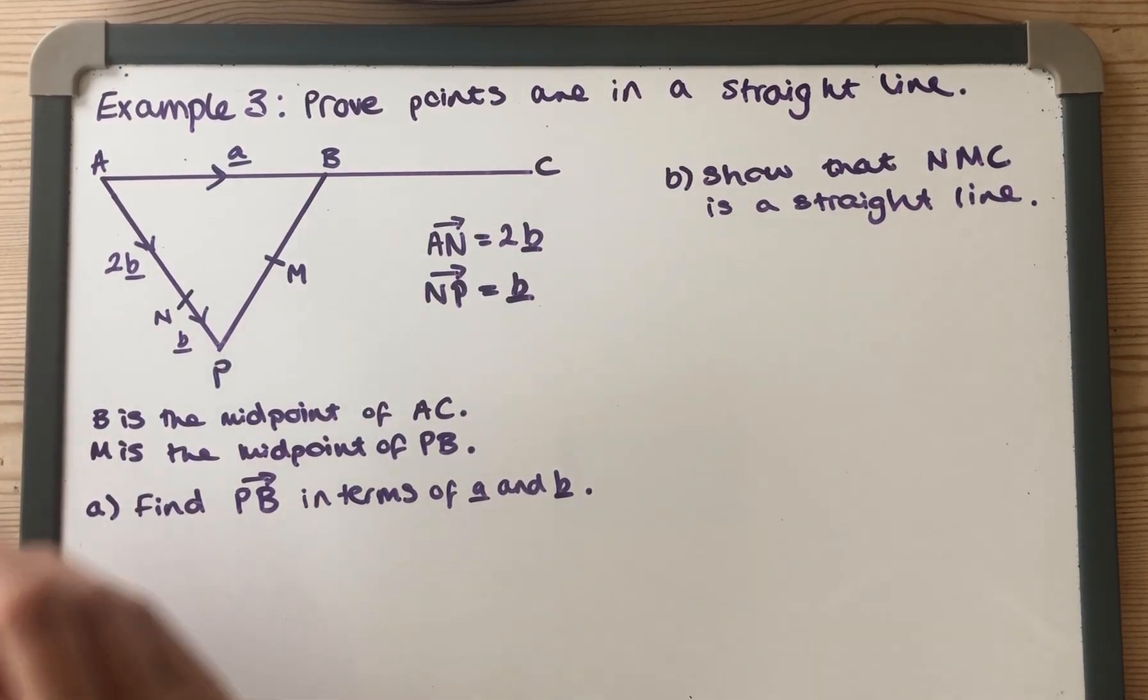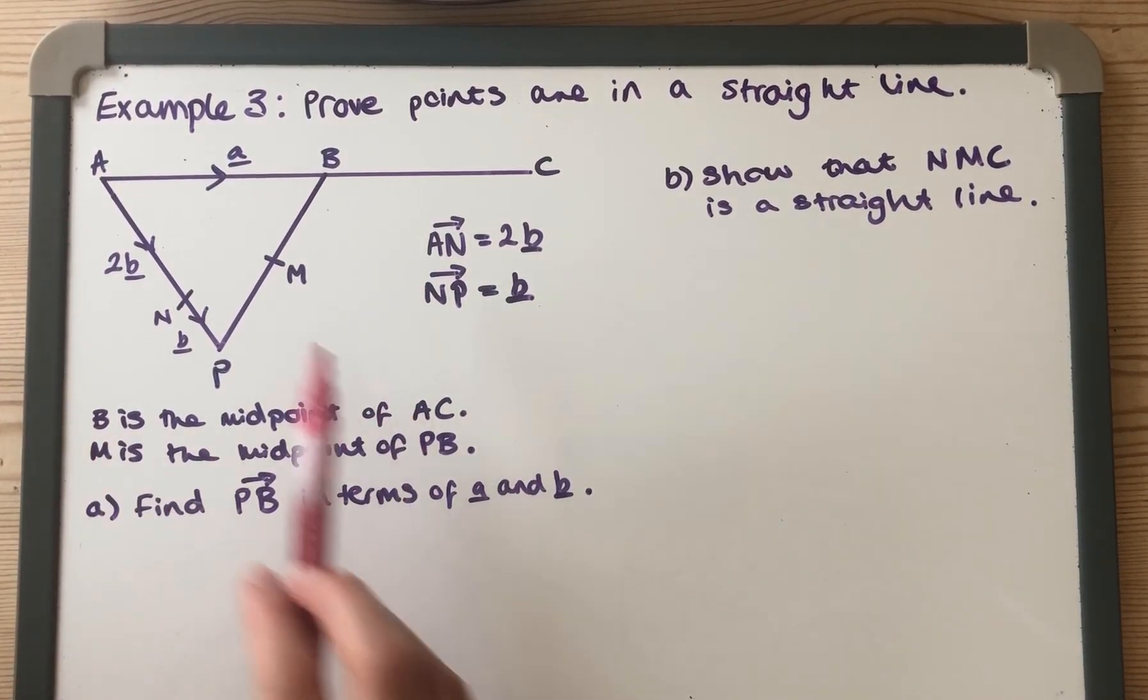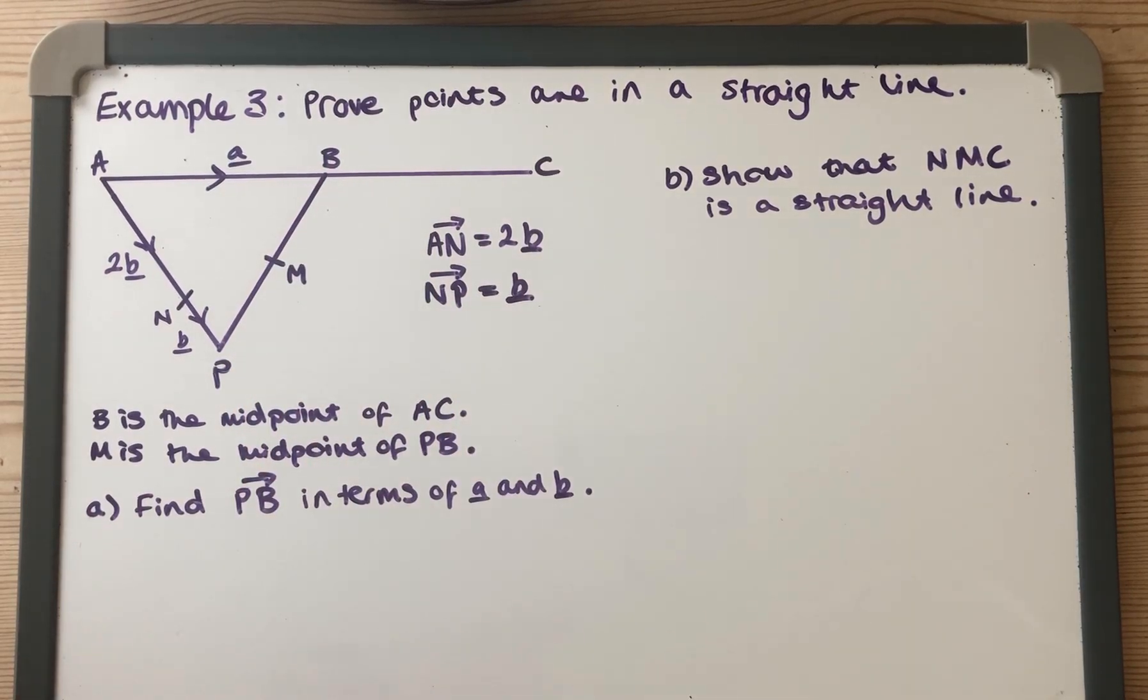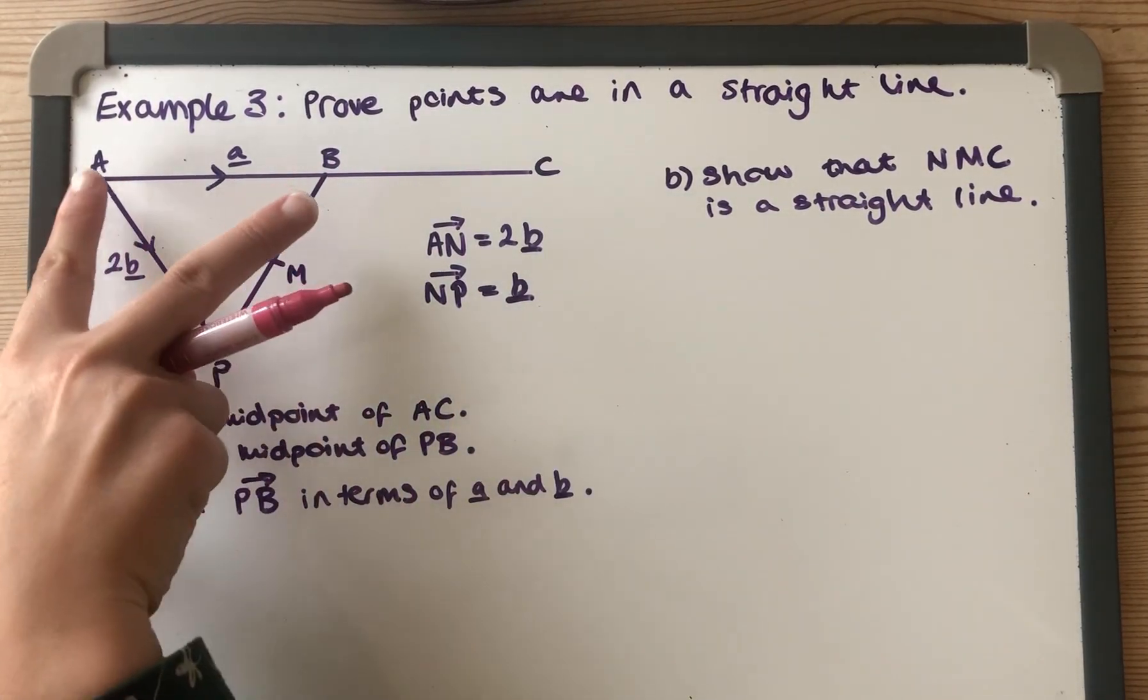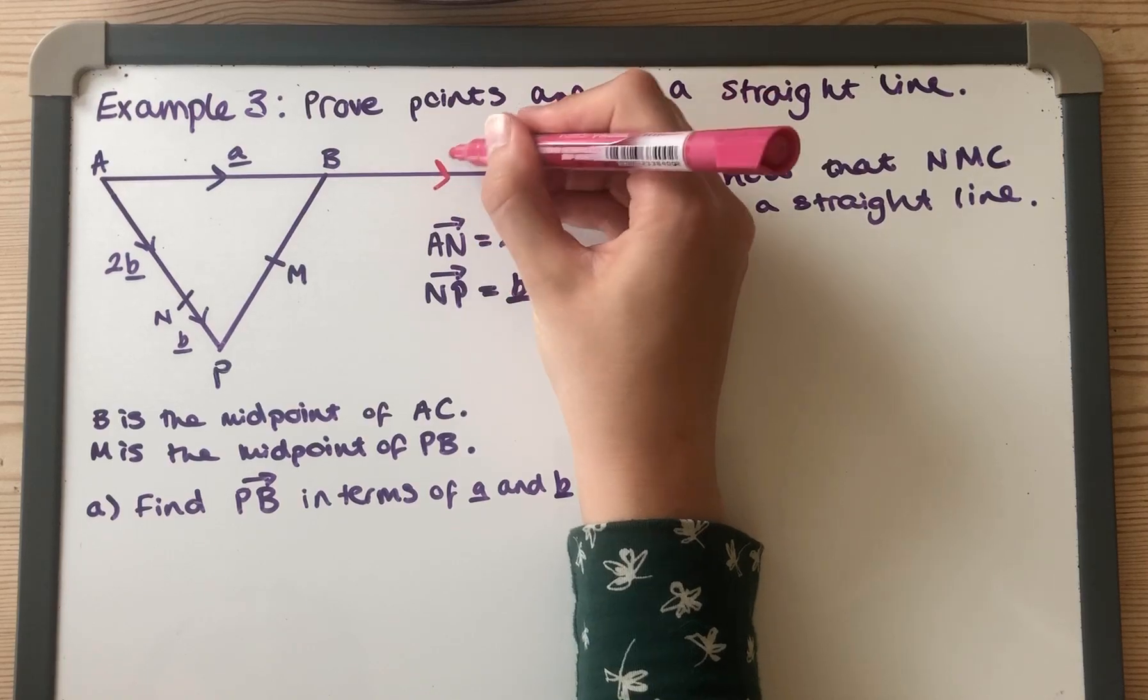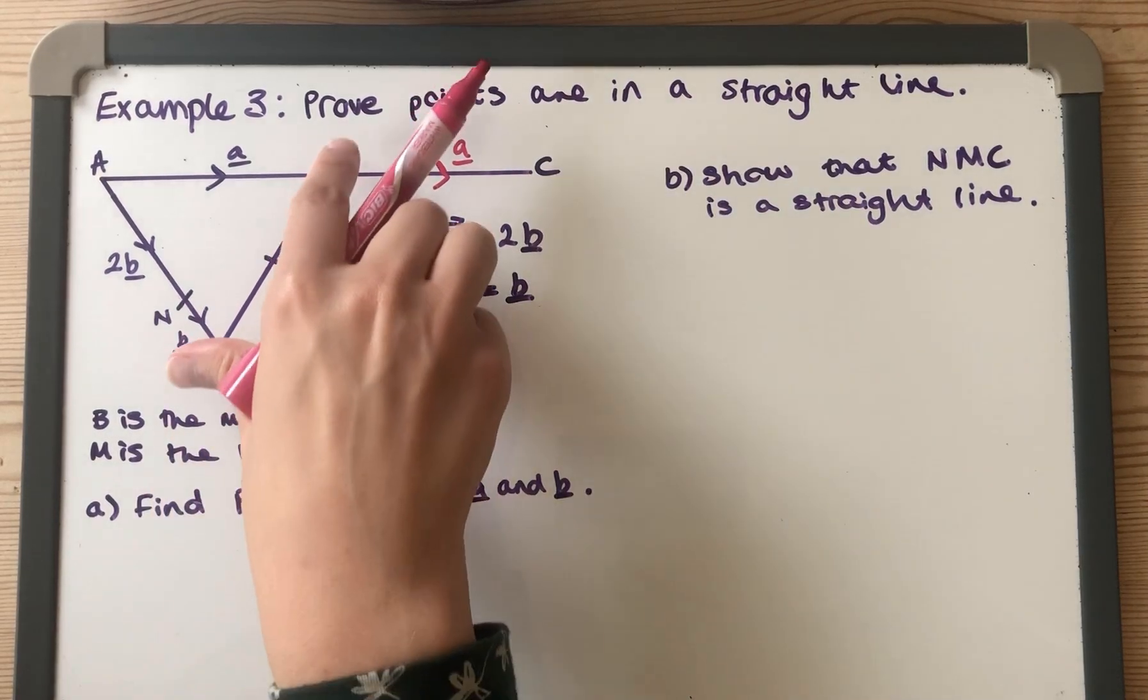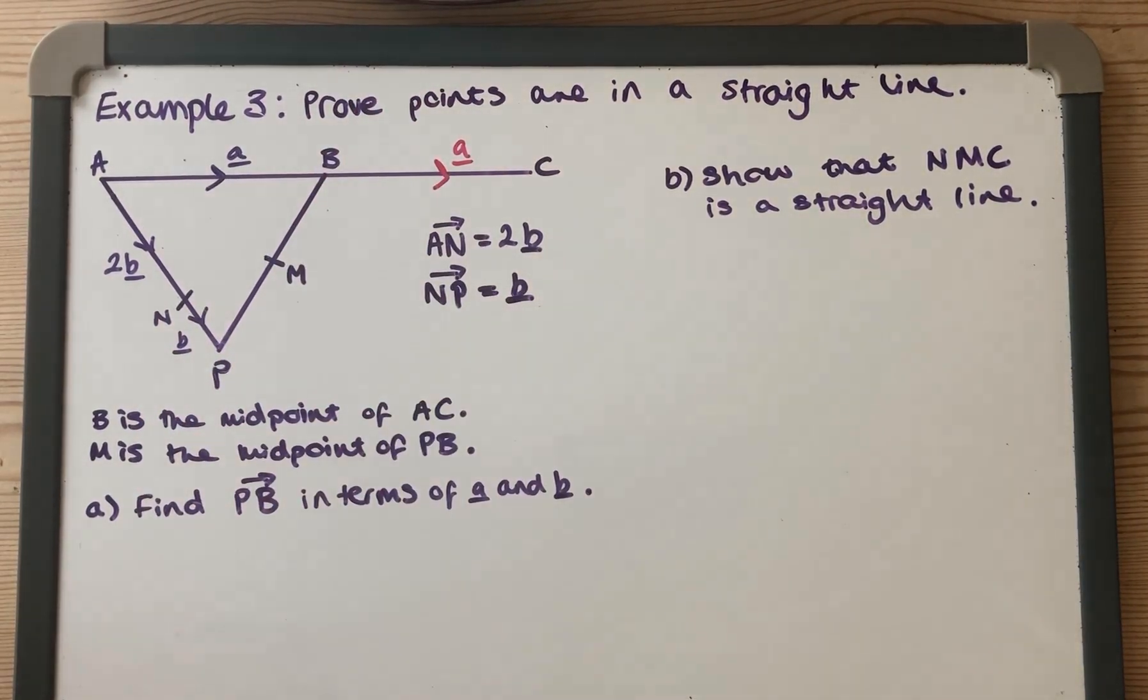So what we've got is B is the midpoint of AC, so that and that, so that kind of indicates something to us straight away, because that bit is A, that means this bit here will also be A, so it's just useful information to have straight away. We've also got that M is the midpoint of PB, that's something else to remember.